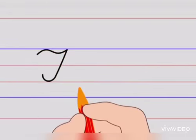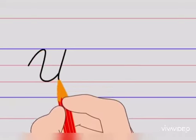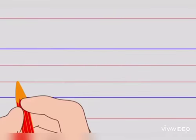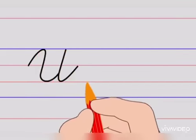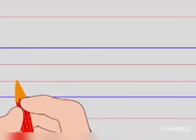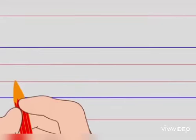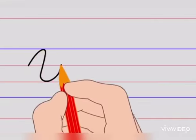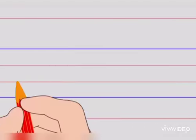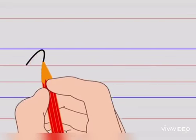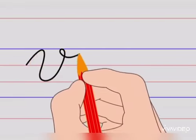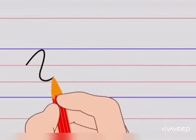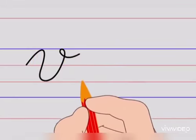The next alphabet is U. Cursive Capital U. Let's try it again — Cursive Capital U. The next alphabet is V. Cursive Capital V. Let's do it again — Cursive Capital V.